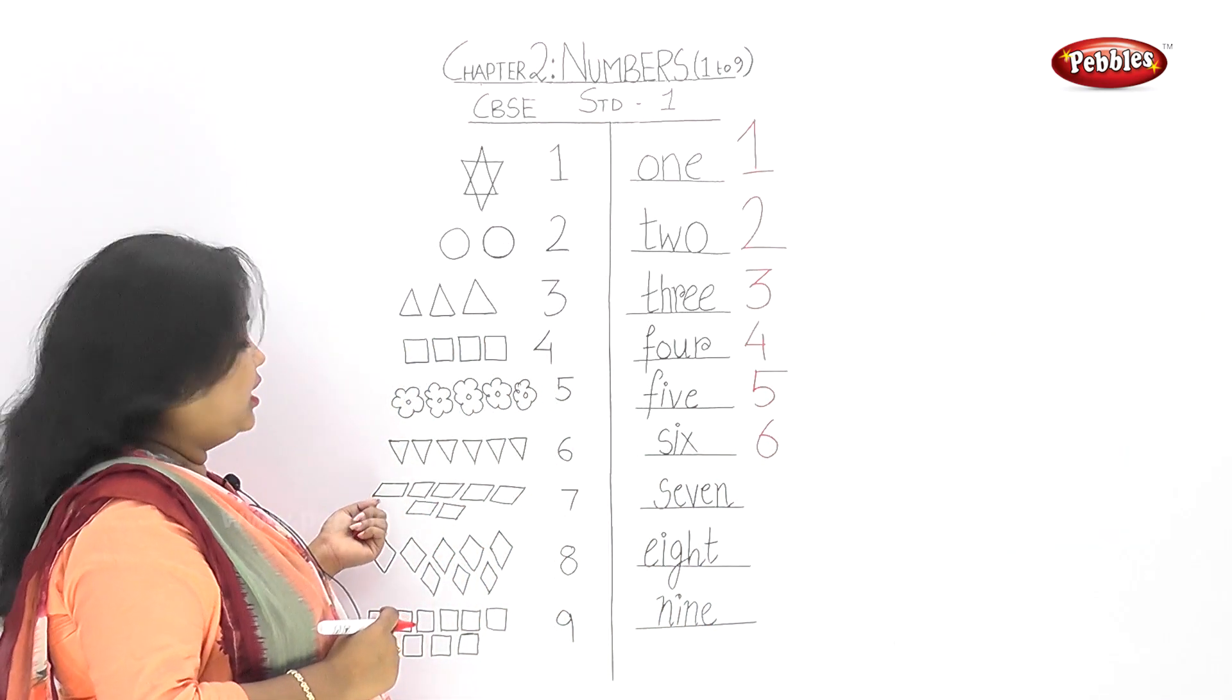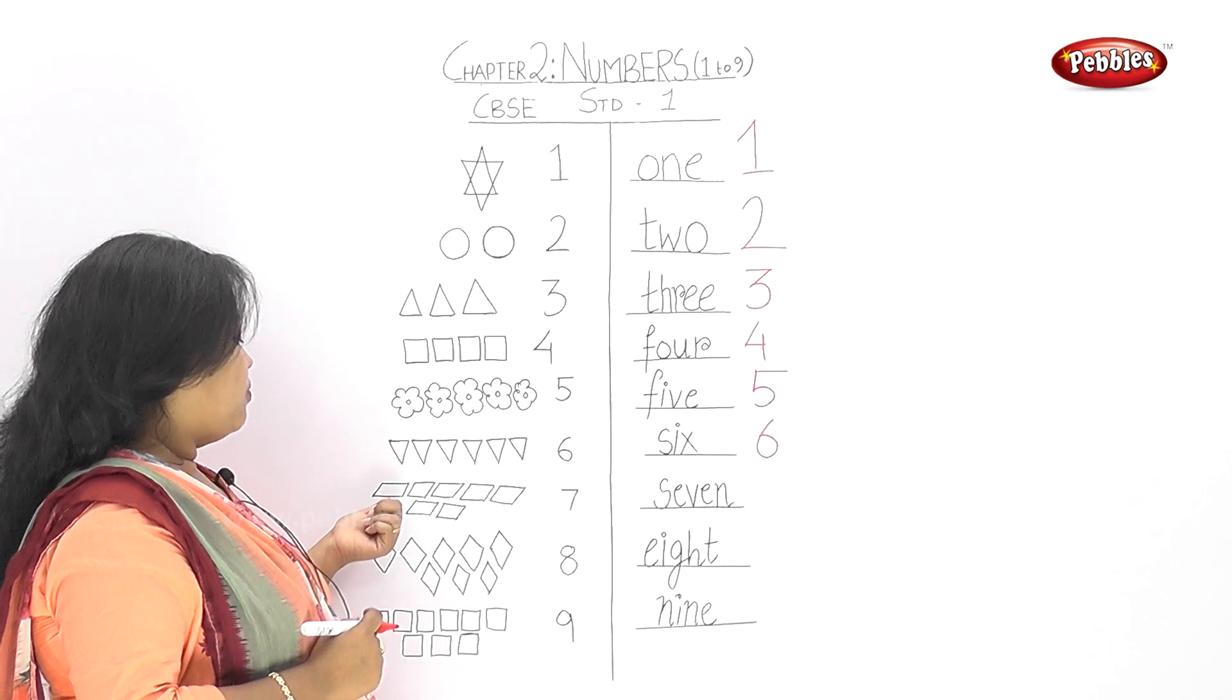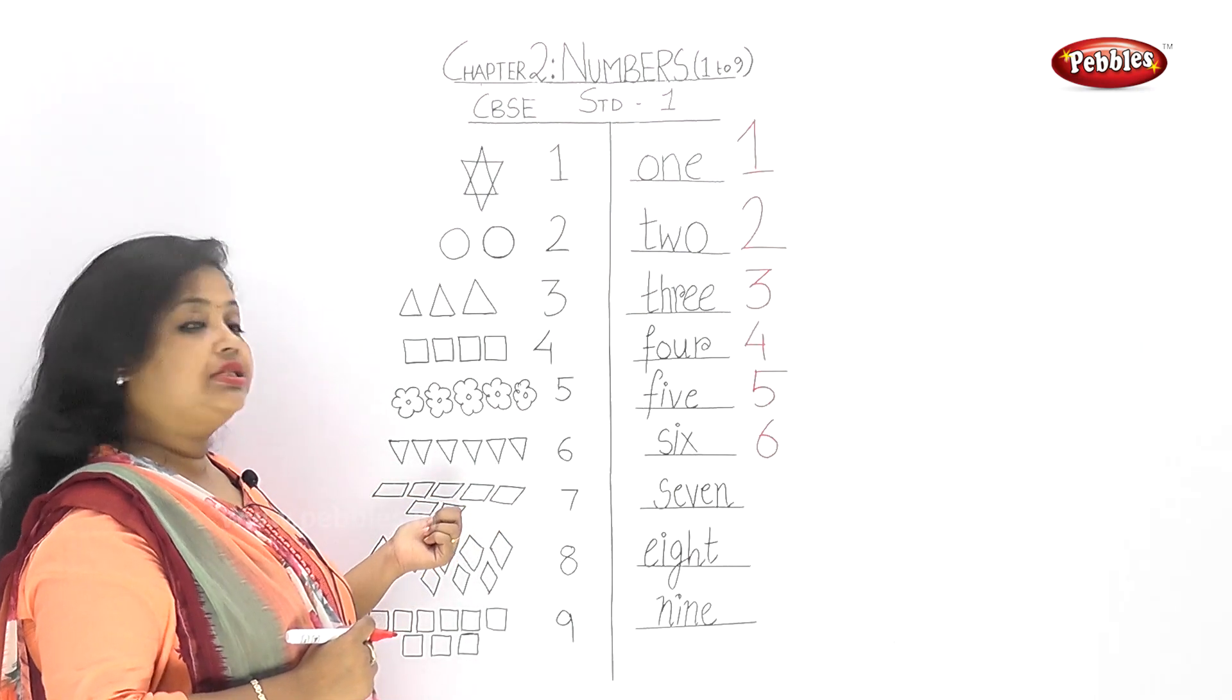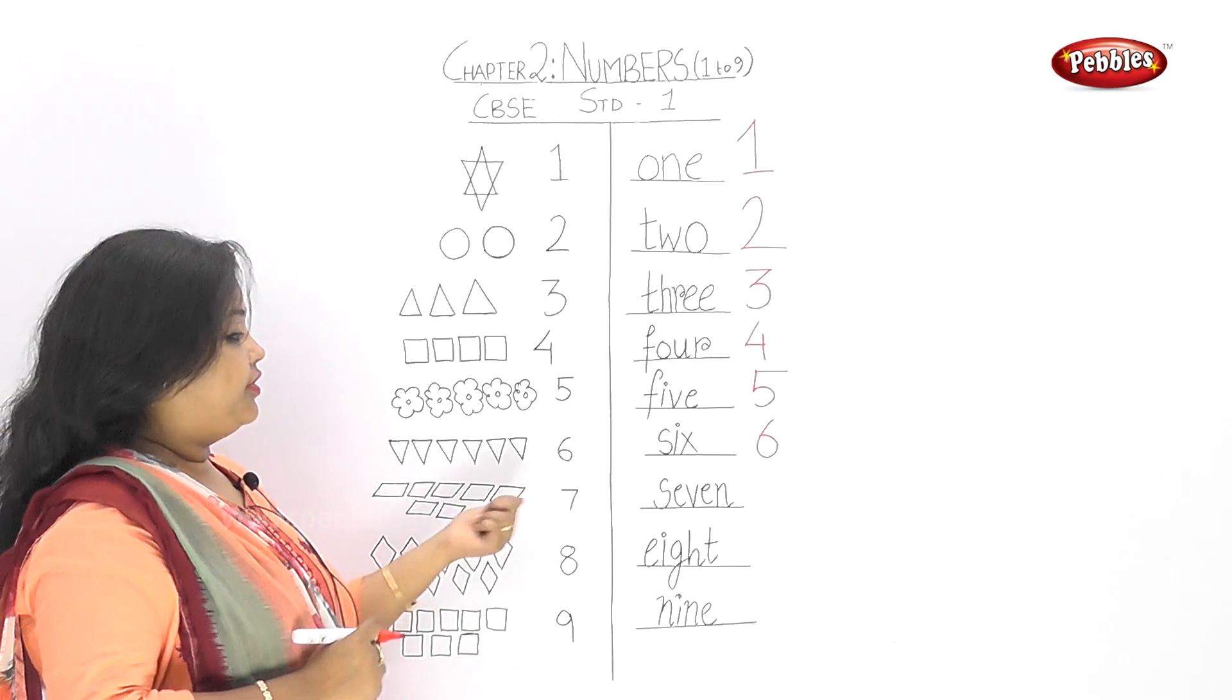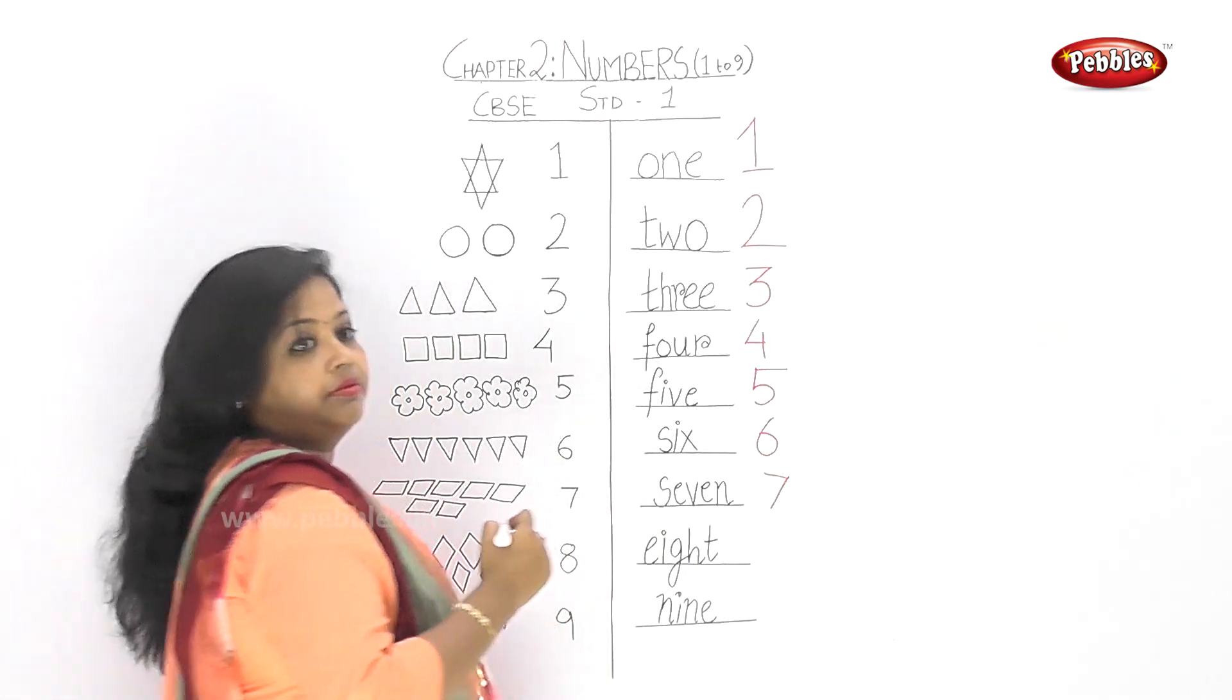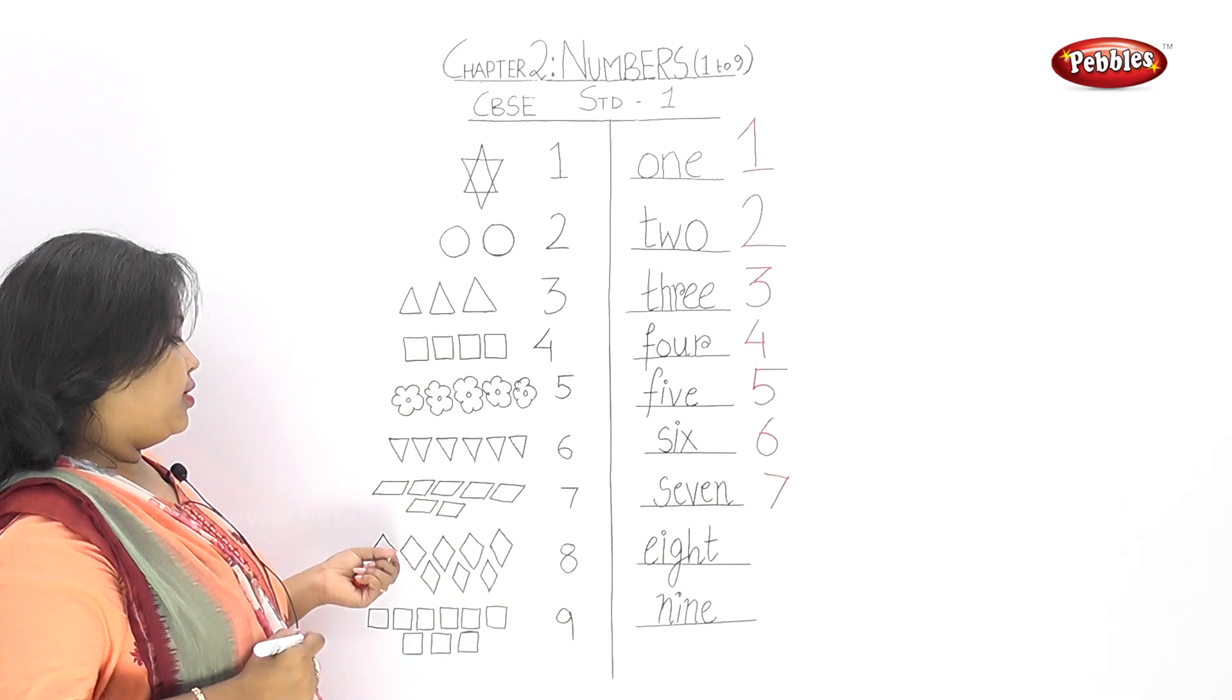After that we have 7. 1, 2, 3, 4, 5, 6, 7. Seven is? Yeah.